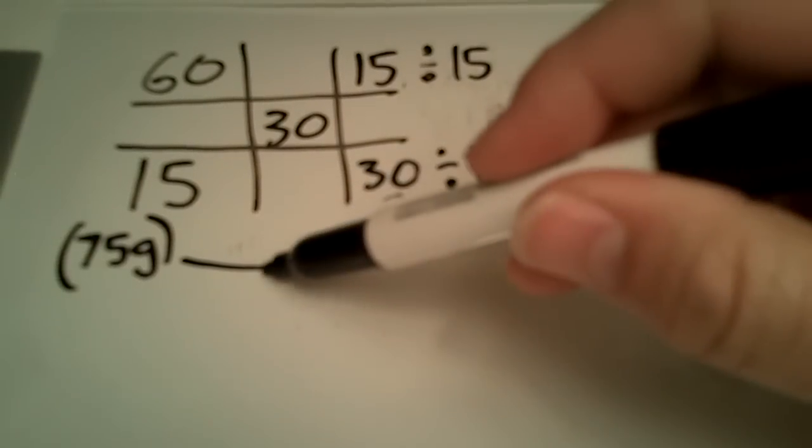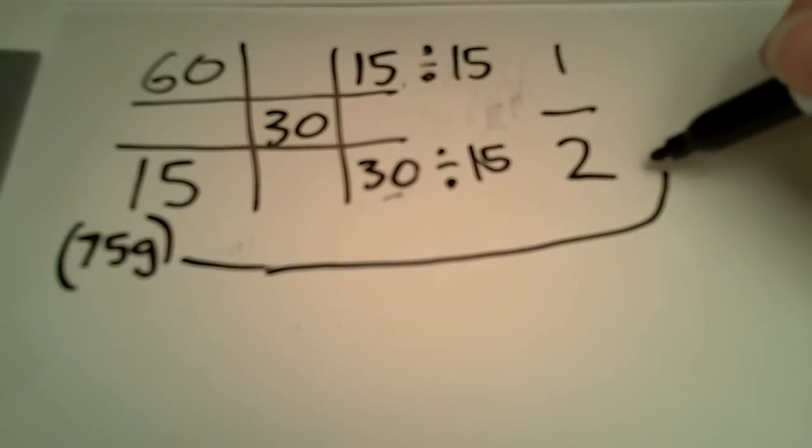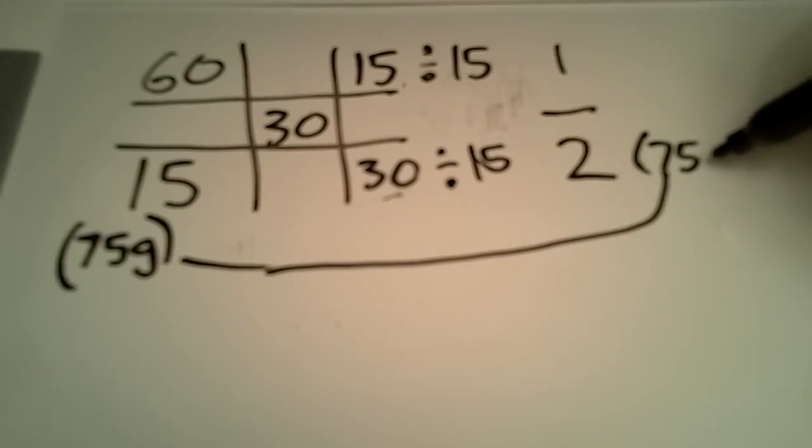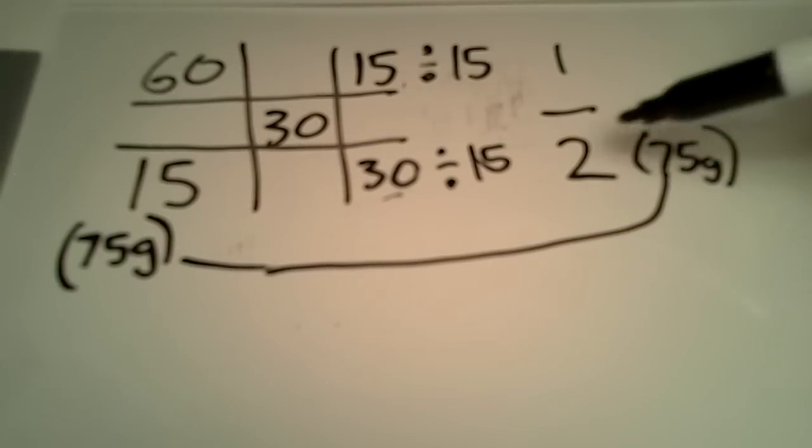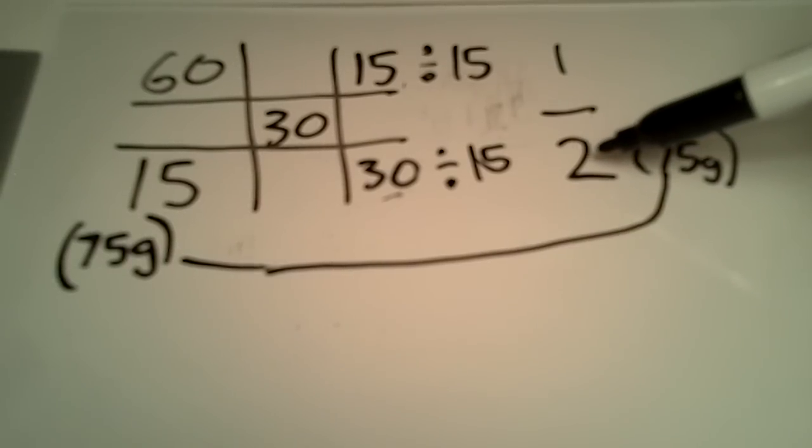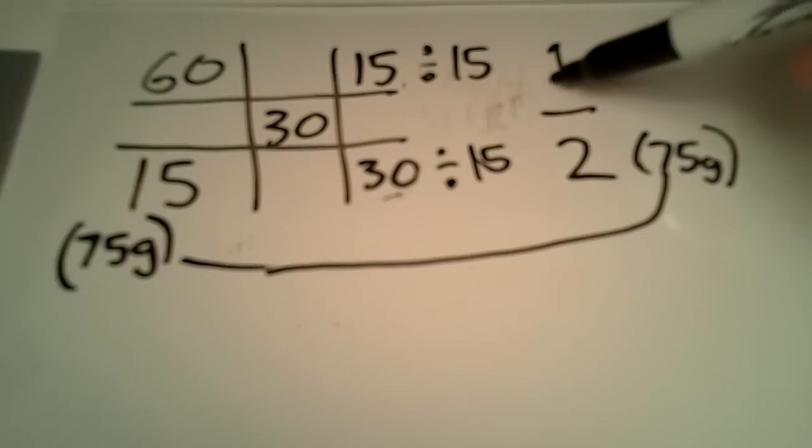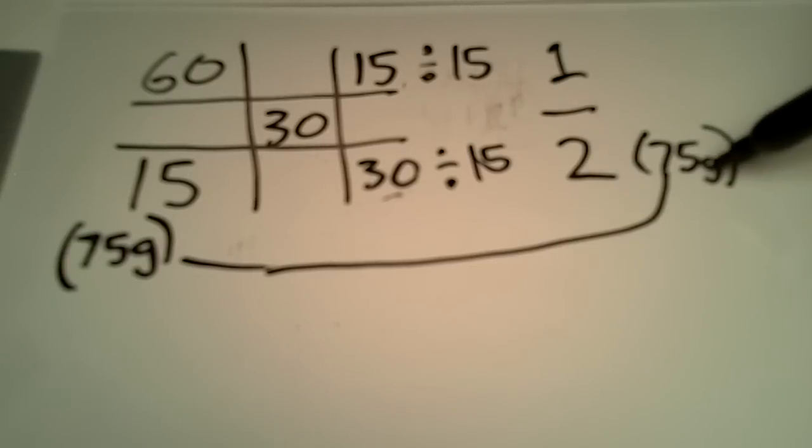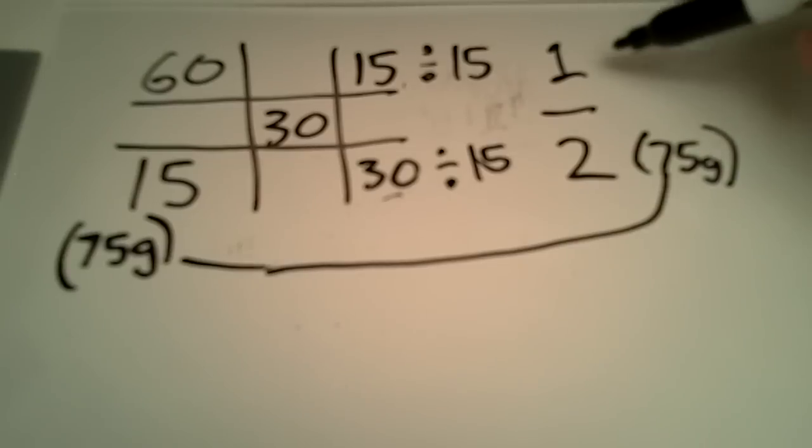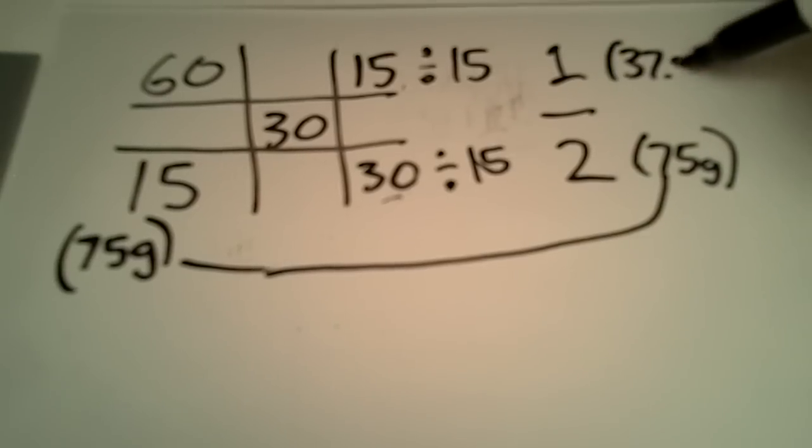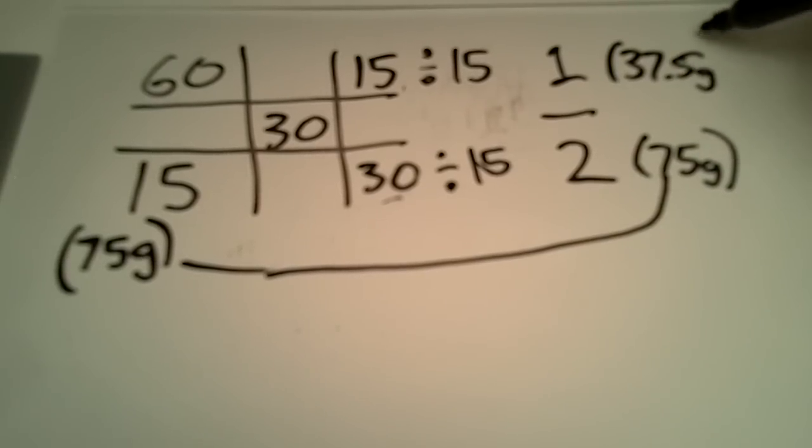Okay. So now this 75 grams, that's over here on our bottom, our number 2 part of the ratio. So if two parts equal 75 grams, then one part would equal half of that, right? So there again, 37.5 grams would be the one part.